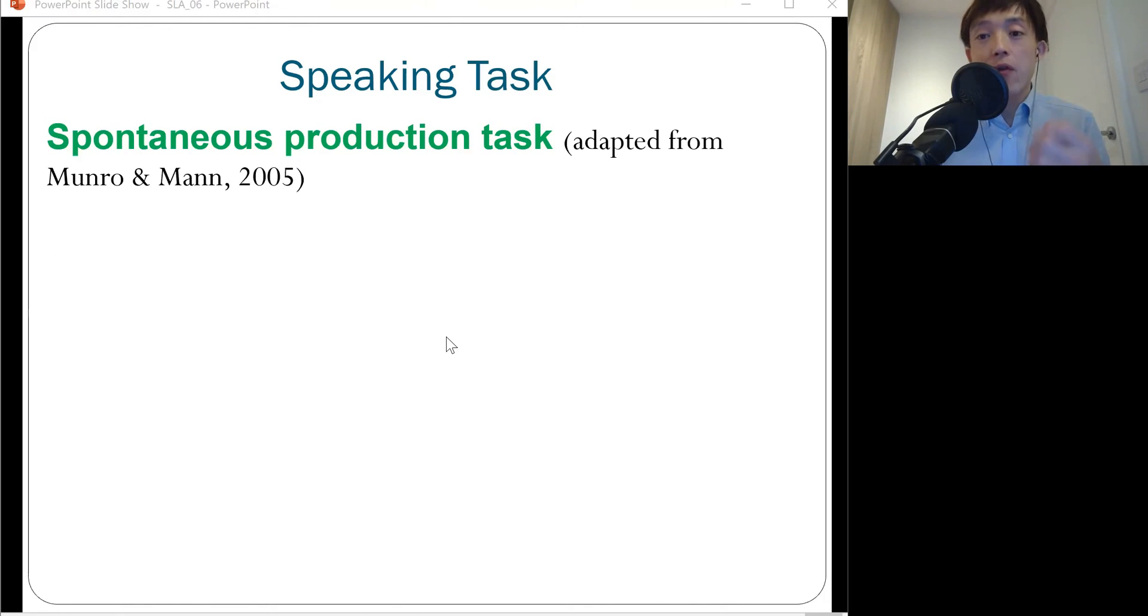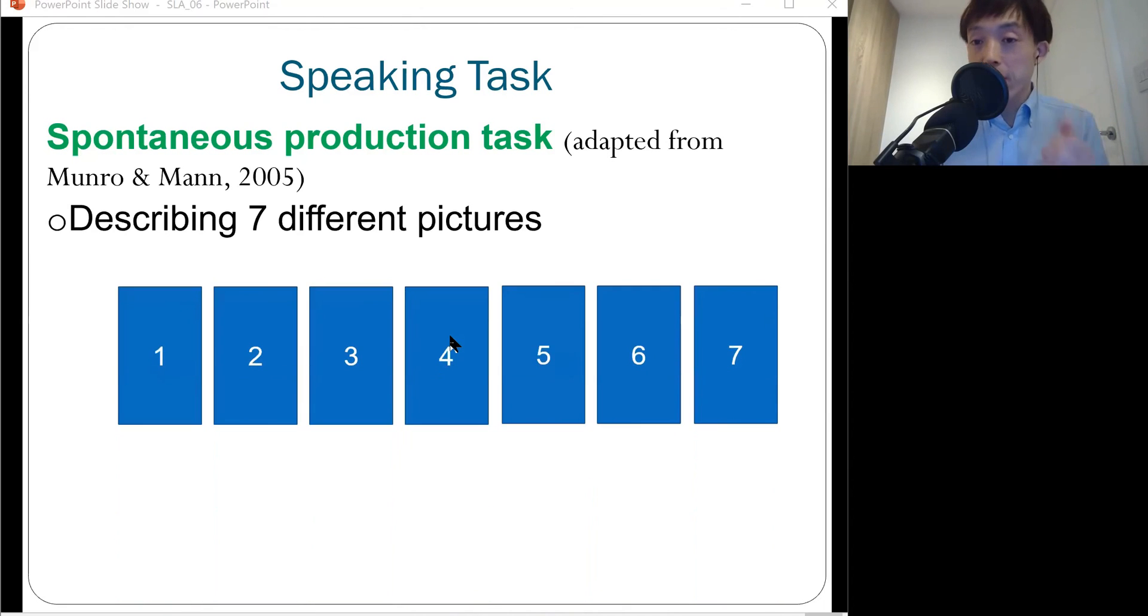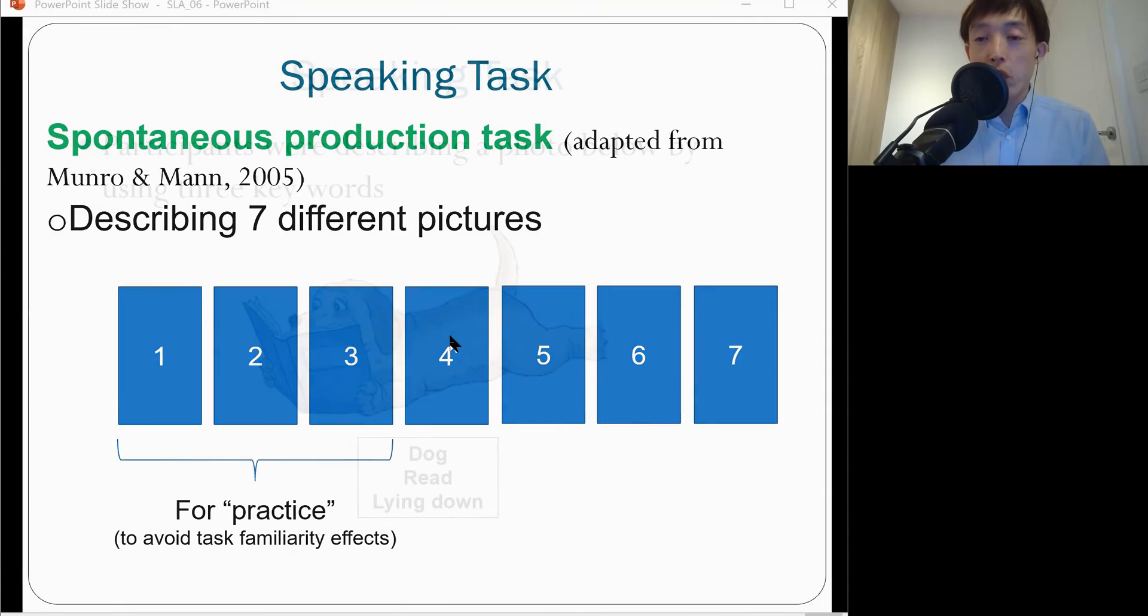Because we're really interested in the way how they would pronounce English R in a spontaneous way, we used this picture description task. Basically, they were asked to describe seven different pictures in a row. Each picture description, they had only 10 seconds. First, three pictures were just used as a practice so that they could become familiar with the task format, and the remaining four pictures were used for analysis.